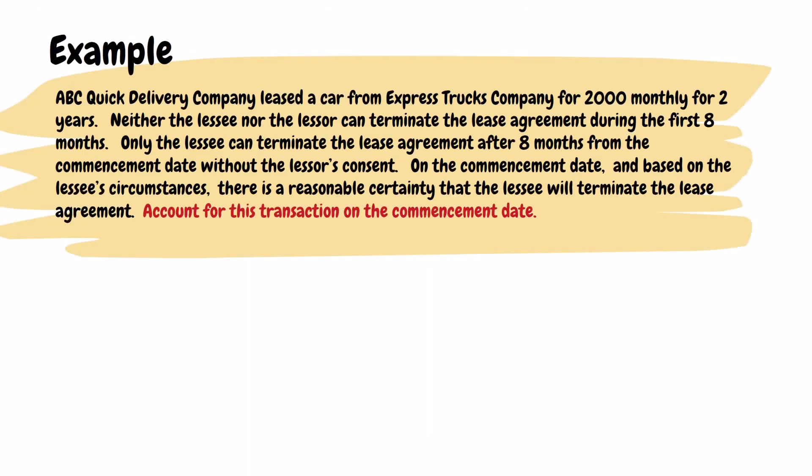ABC Quick Delivery Company leased a car from Express Trucks Company for 2,000 monthly for two years. Neither the lessee nor the lessor can terminate the lease agreement during the first eight months. Only the lessee can terminate the lease agreement after eight months from the commencement date without the lessor's consent. On the commencement date, based on the lessee's circumstances, there is a reasonable certainty that the lessee will terminate the lease agreement.